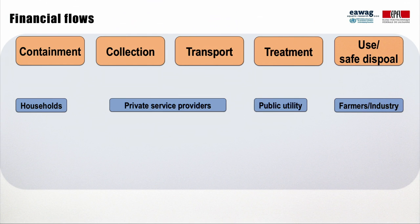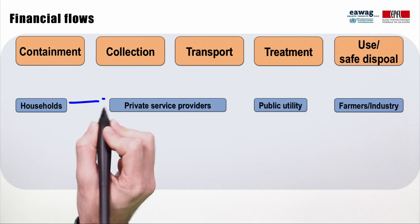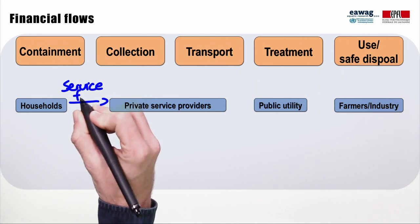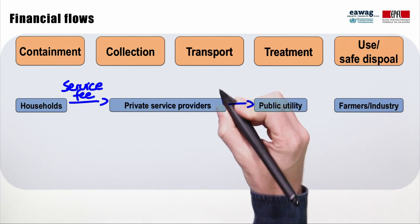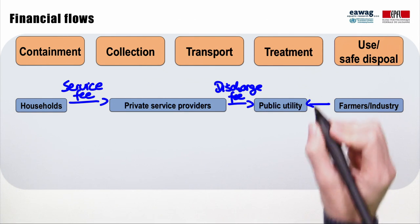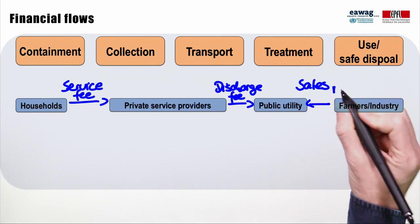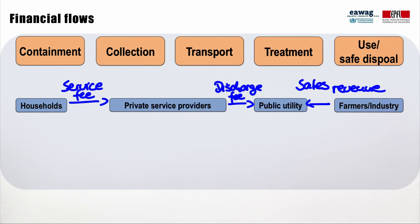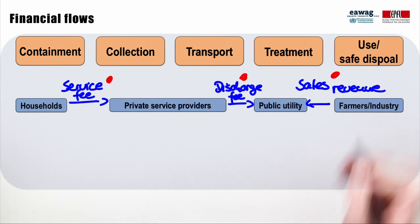A common example of institutional arrangements in fecal sludge management consists of a household, a private company for fecal sludge collection and transport, a public utility for treatment, and a farm or industry that uses treatment products. In this common financial flow model, households pay a service fee to the private service provider for collection and transport. At the treatment plant, the company pays a discharge fee, which transfers responsibility for managing the sludge to the treatment provider. The sale of treatment products by the utility provides additional revenue. The service fee, discharge fee, and revenue from treatment product sales are all financial transfers, with arrow directions indicating money flow — which is why we call these financial flow models.